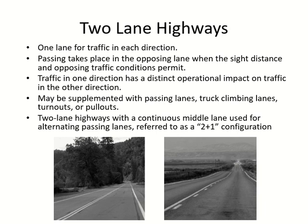Two-lane means one lane in each direction. A four-lane highway means two lanes in each direction. Two-lane highways are not analyzed the same as freeways or multi-lane highways because of additional complexity. The first reason, related to safety, is passing.